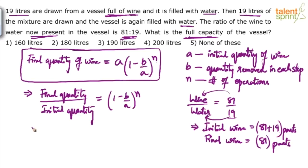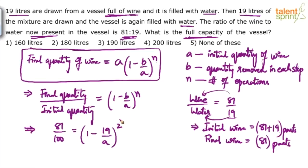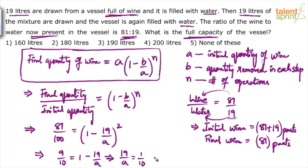Now look at the formula. On the left hand side we have final quantity by initial quantity. Since this is a ratio, the number of liters does not matter. We can say final wine is 81 and initial quantity was 100. So: 81 over 100 equals (1 minus 19 over a) to the power of 2. Take the square root on both sides: 9 over 10 equals 1 minus 19 over a. Simplifying: 19 over a equals 1 minus 9 over 10 equals 1 over 10. Therefore a equals 19 times 10 equals 190. The full capacity of the vessel is 190 liters — option 3.